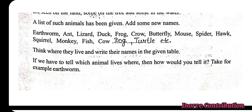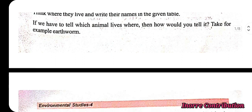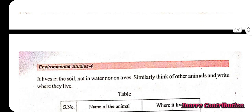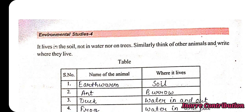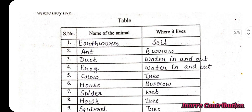If we have to tell which animal lives where, then how would you tell it? Take for example the earthworm — it lives in the soil, not in water nor on trees. Similarly, think of other animals and write where they live. Earthworm lives in soil.